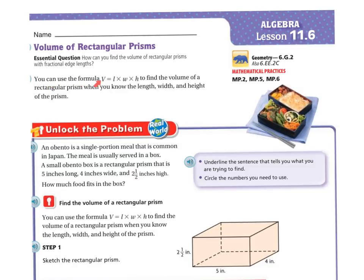You can use the formula V, or volume, equals L times W times H. So length times width times height to find the volume of a rectangular prism when you know the length, width, and height of the prism.